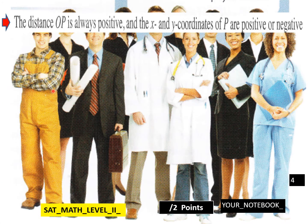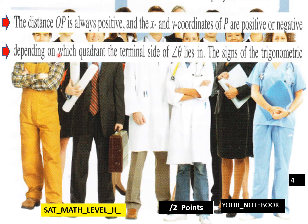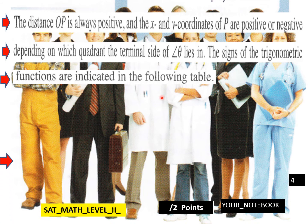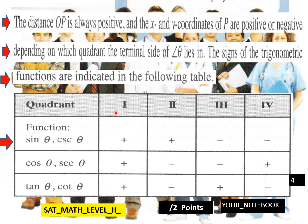That's where those come from. The distance of P is always positive, and the x and y coordinates of P are positive or negative depending upon which quadrant the terminal side of angle theta lies in. The signs of the trigonometric functions are indicated in the following table. When you are in these four different quadrants, here are the signs of your different trigonometric functions. Positive, positive, negative, negative for sine and cosecant. Cosine and secant are thusly, and tan and cotan are thusly as well.